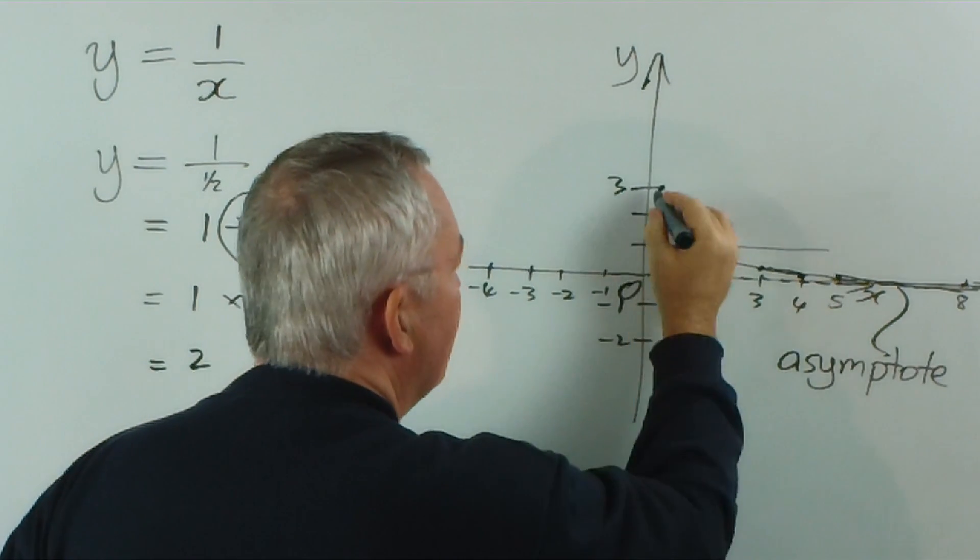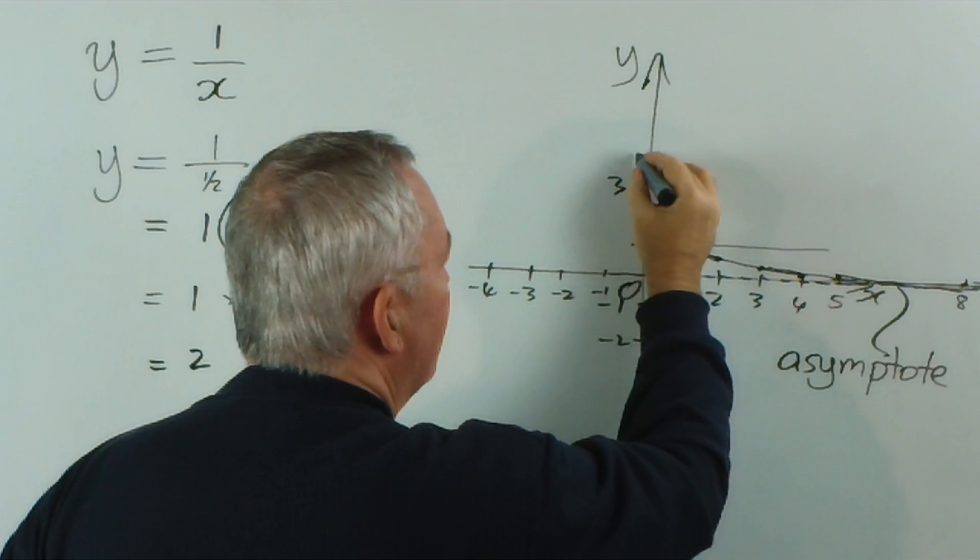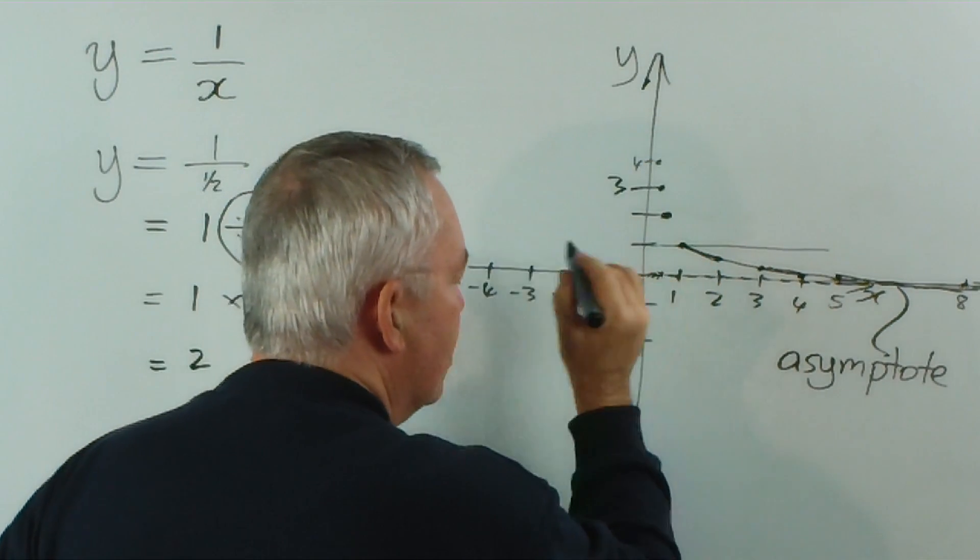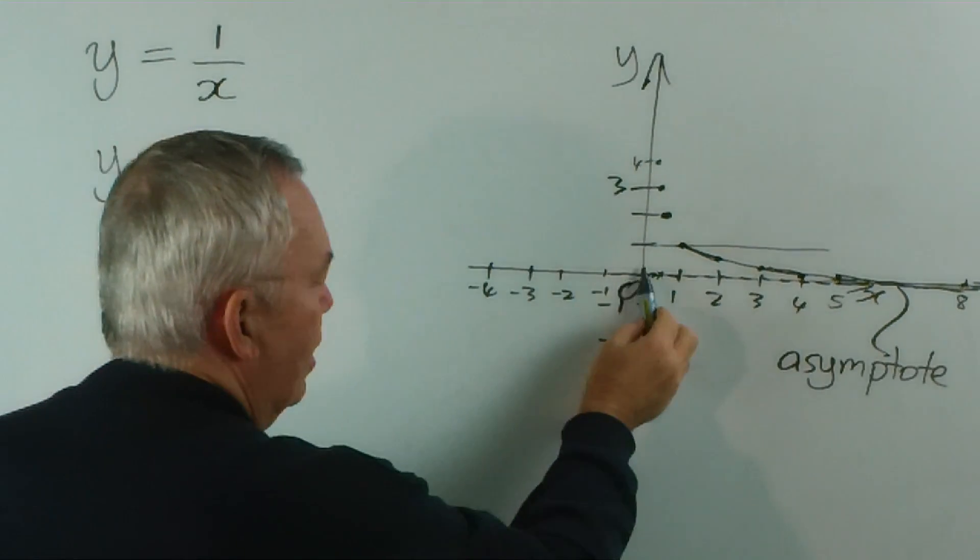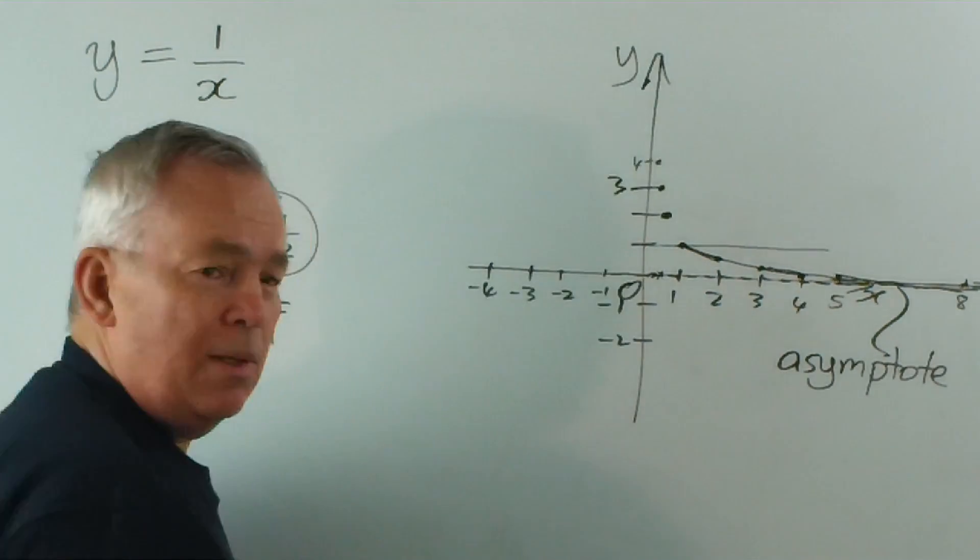When we put in a quarter, we get a value of 4, the fifth, the sixth, the seventh. If we put in a value of 1 millionth, we would get a y value of plus 1 million.